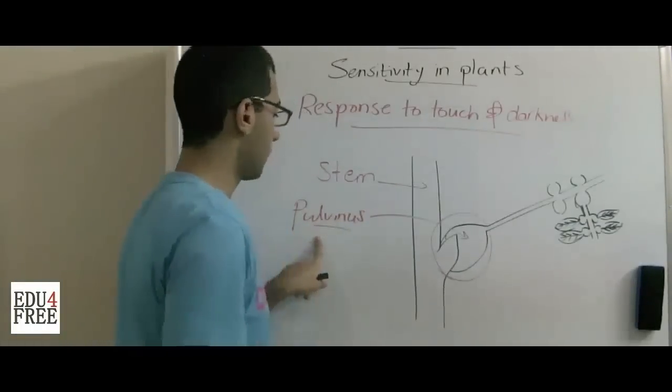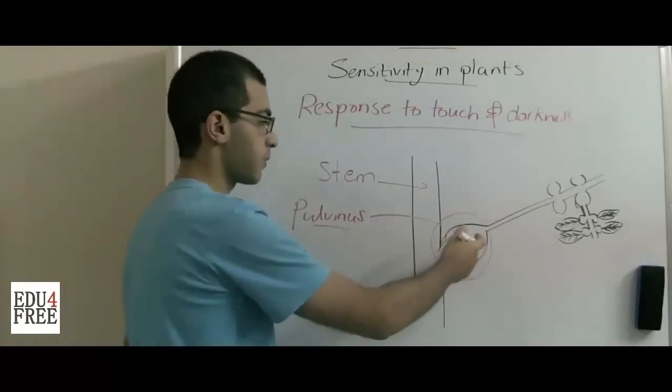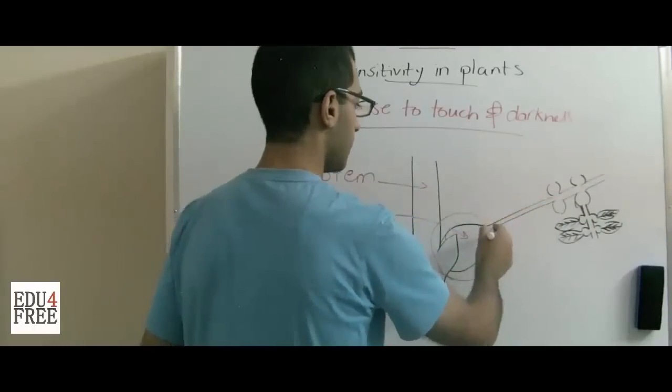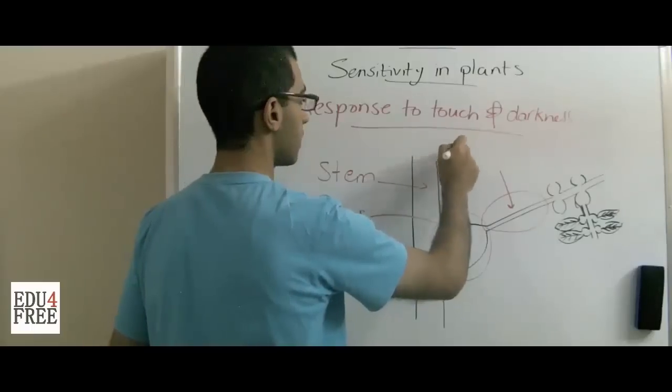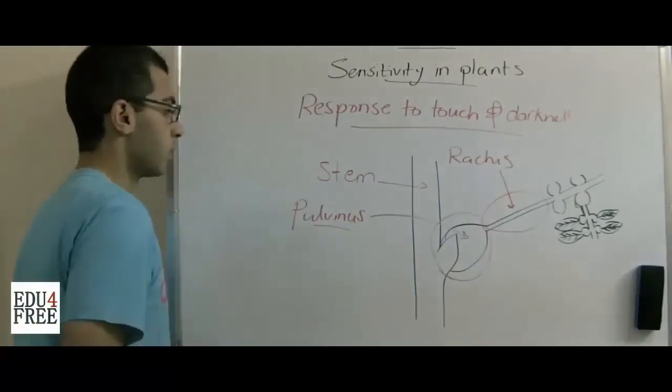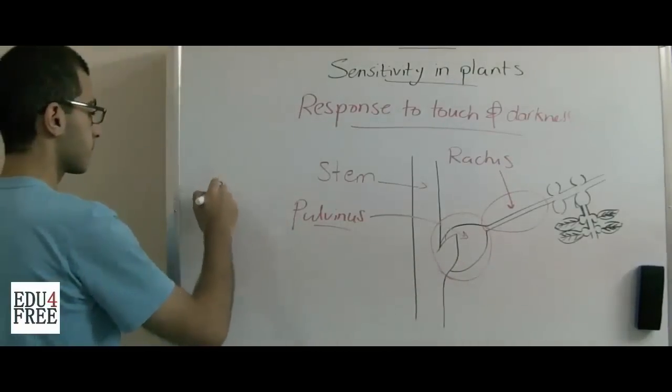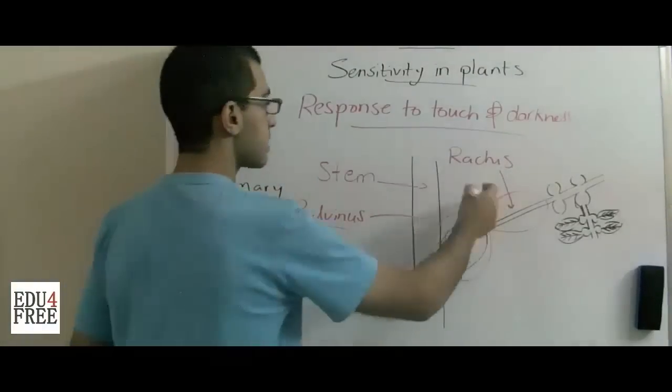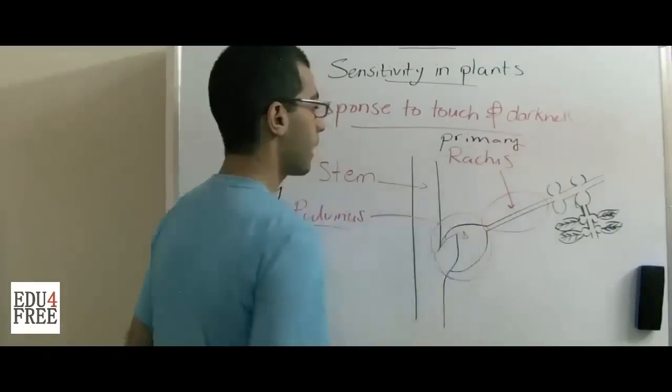A pulvinus is the swollen structure at the end of the branch, and the slim part here of the branch is called ratches. This is a primary pulvinus and this is a primary ratches.